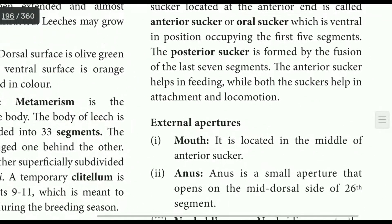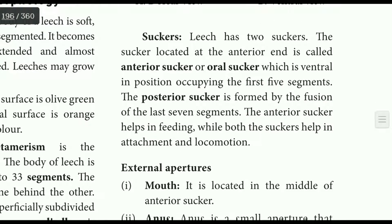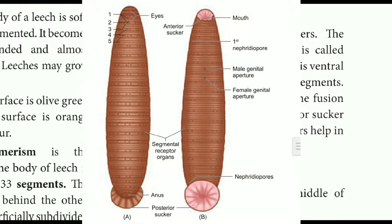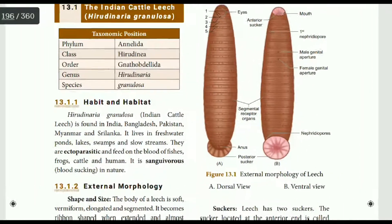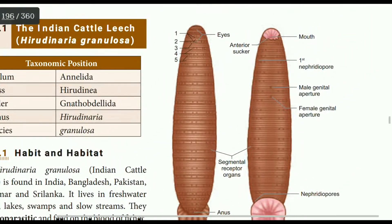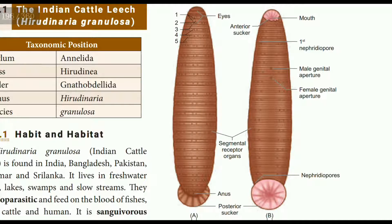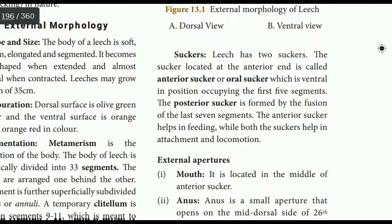The leech has two suckers: one anterior sucker and one posterior sucker. The anterior sucker occupies the first 5 segments. The suckers are used for feeding, locomotion, and attachment.